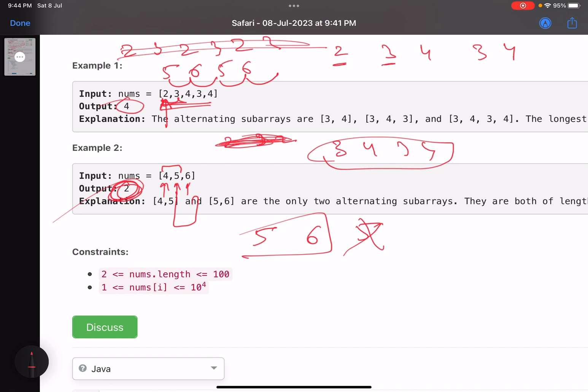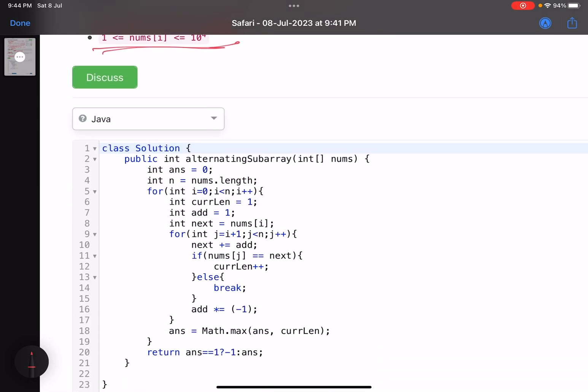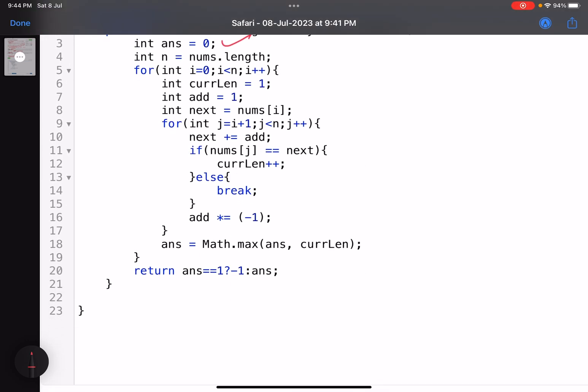Now just see here the constraints: the number of elements you can have in your array is 100, and each element can be 10 to the power 4. So again, an implementation-based problem. Pick every index as the starting position of the array and just check what's the maximum length you can have if you start from this position. That is what I've done here. My answer equals zero. This is the starting position of the subarray. Current length equals 1 because a single element will obviously be a valid pattern. Obviously I'll not have to consider it - I'll have to return minus one if the length of the subarray is 1, but I have to consider this element. Current length equals 1. This is add - add is what's the value that you need to add. It's alternating - once you'll add 1, then minus 1, then 1, then minus 1. So to make things simple, I've done it: the next element should be nums[i].